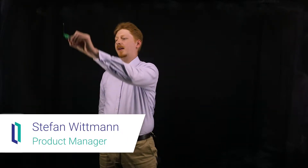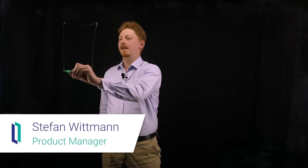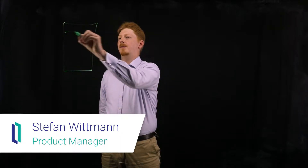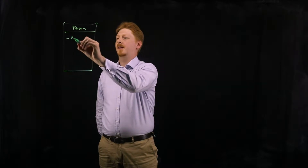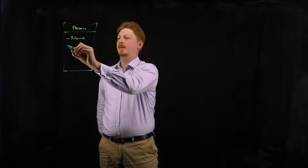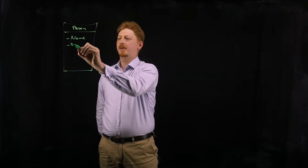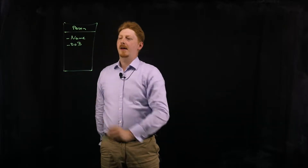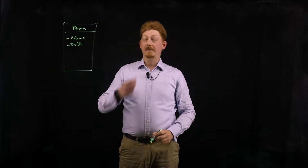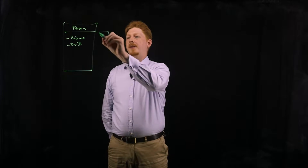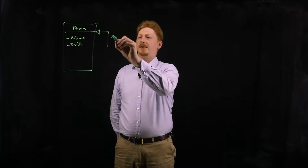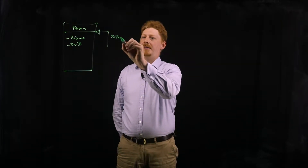Let's take a look at why multi-inheritance is such a powerful feature. Let's assume I have a class Person with a couple of properties — the name and the date of birth. If this is a persistent class, then by default it inherits from one system class which is %persistent.